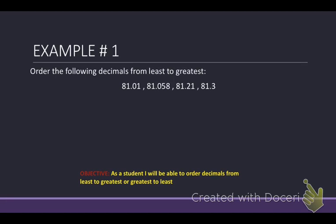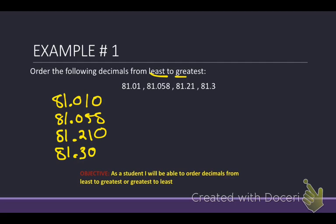Okay, it says order the following decimals from least to greatest. So we need to remember least to greatest. And the first thing it said is line the decimals up vertically. So we're going to do 81.01, 81.058, 81.21, and 81.3. Second step was use zeros as placeholders. Go ahead and throw those in there. And then we're going to work from left to right.